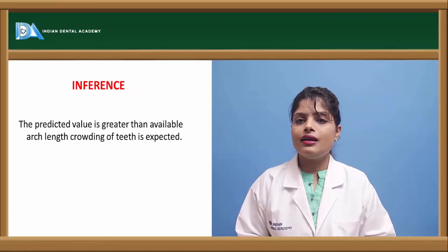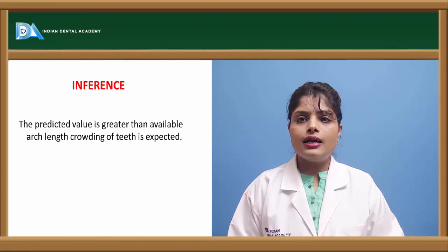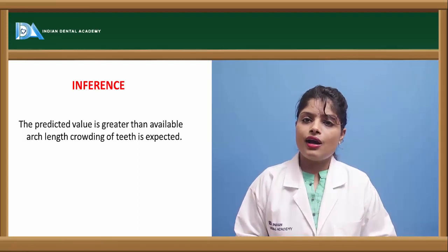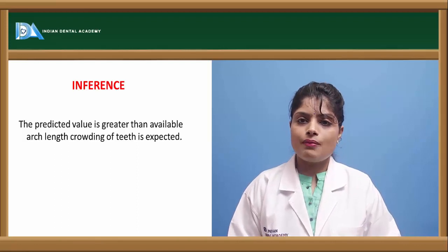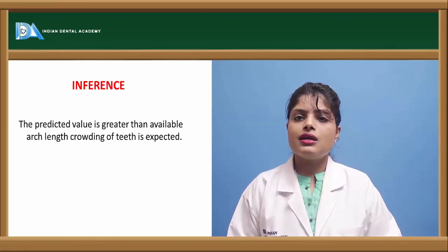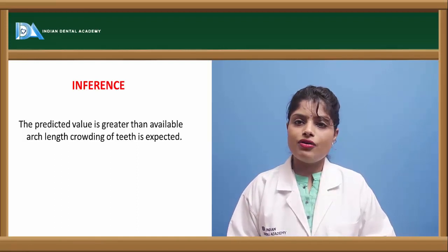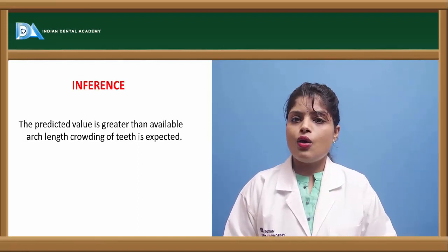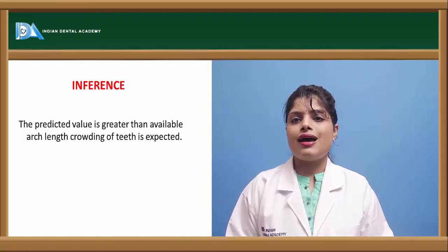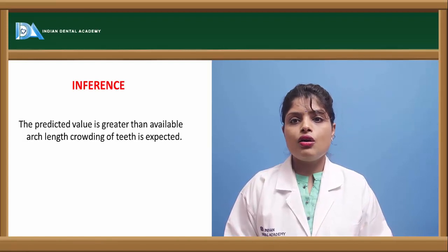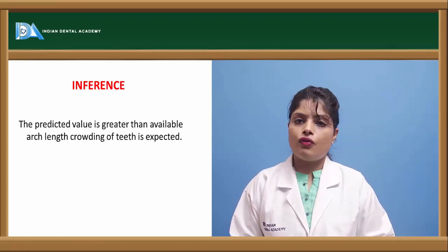In conclusion, Moyer's mixed dentition analysis allows us to infer the space required for the eruption of the cuspids and bicuspids by carrying out a probability test based on the mesiodistal dimensions of the permanent incisors already erupted. This further helps to predict whether there will be crowding or spacing in future dentition, based on whether the space available is sufficient for the permanent teeth to erupt.